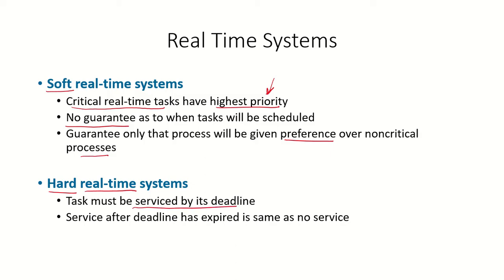In hard real-time systems, the system guarantees that the incoming real-time process will definitely be serviced before its deadline. If the system services the process after the deadline has expired, that means no service has been performed. So in a hard real-time system, the system will make sure that the process is serviced before its deadline.